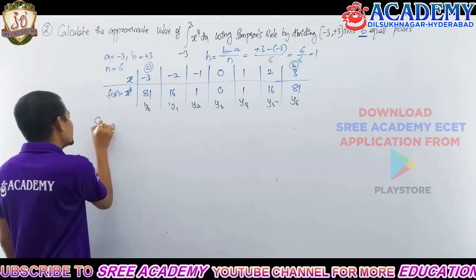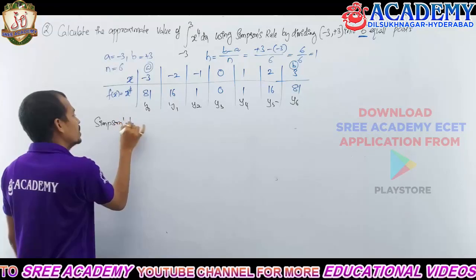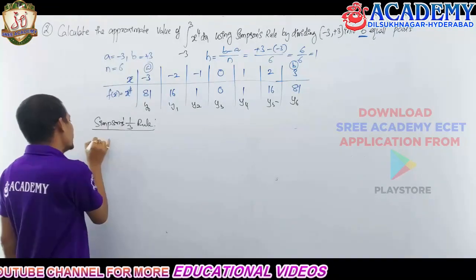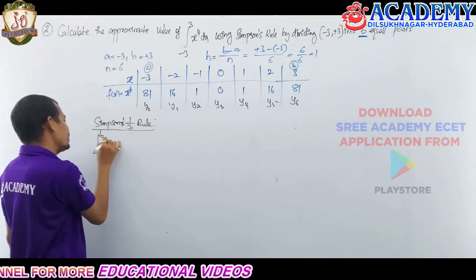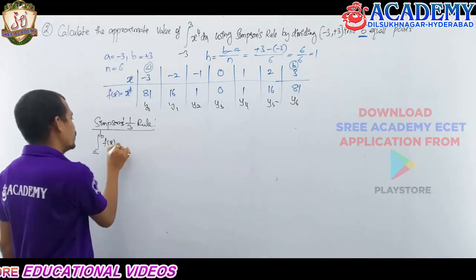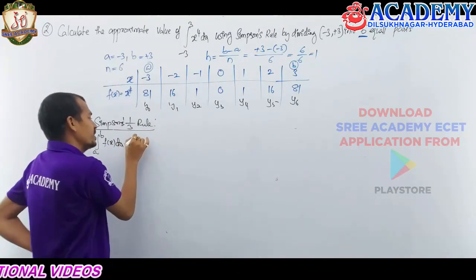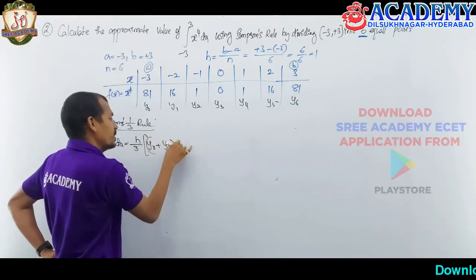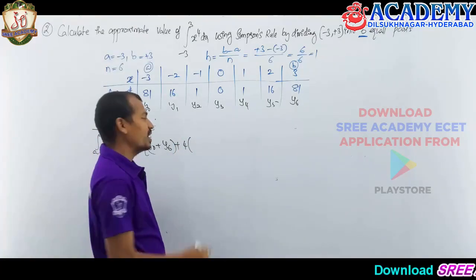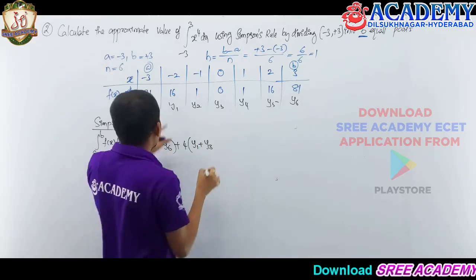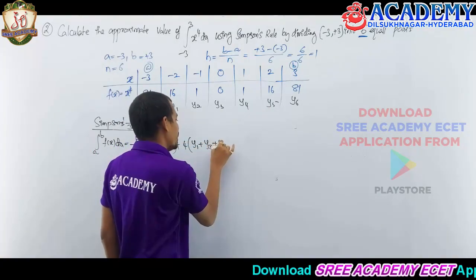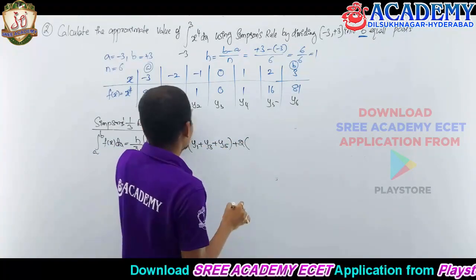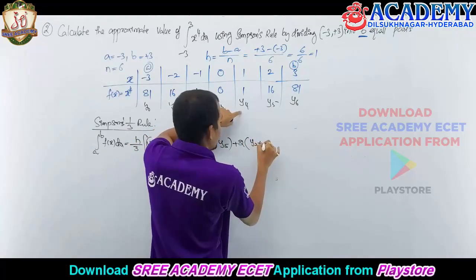We want Simpson's 1/3 rule. The formula is: integral from a to b of f(x) dx equals h divided by 3 times [y₀ plus yₙ, plus 4 times the odd-indexed terms (y₁ + y₃ + y₅), plus 2 times the even-indexed middle terms (y₂ + y₄)].